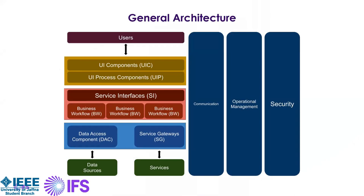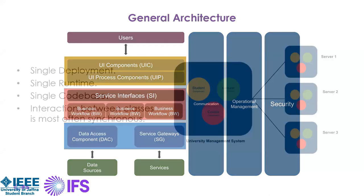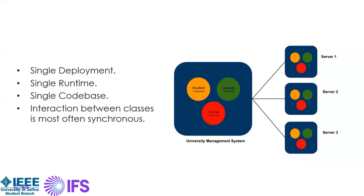In the classic monolithic architecture, on the top there are users, and then all your process components are bound together as a single application. The entire stack is called a monolith. Here is how a typical university management monolith system would look after deployment — the entire blue box is the monolithic application, containing a student component, lecture component, and more. It is a single deployment, single runtime, single code base with no separate code bases for individual components, and interaction between classes is mostly synchronous.